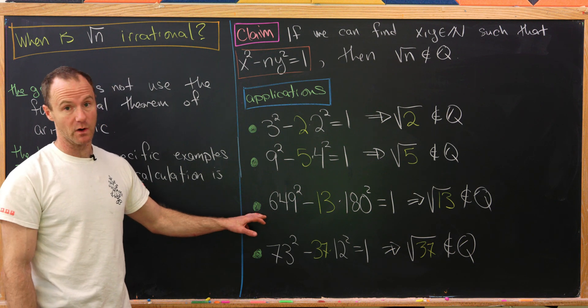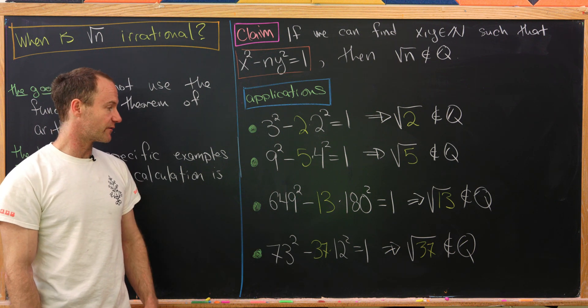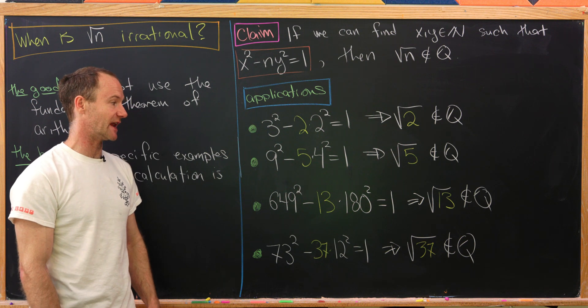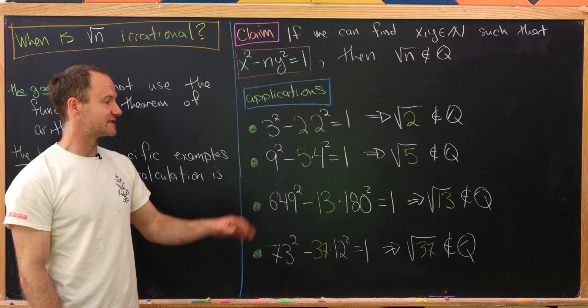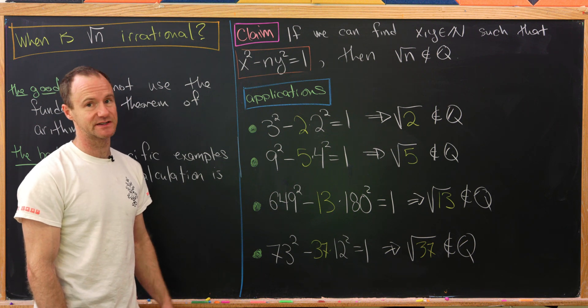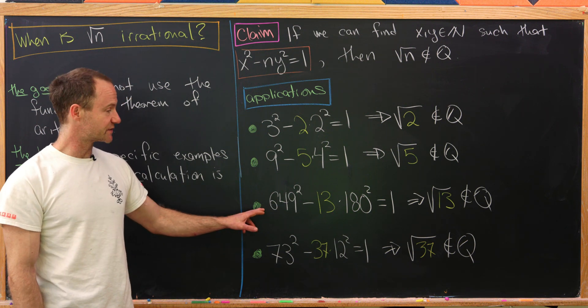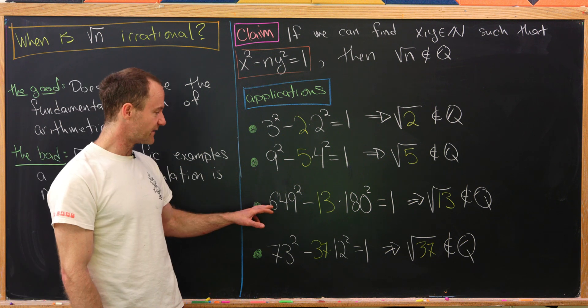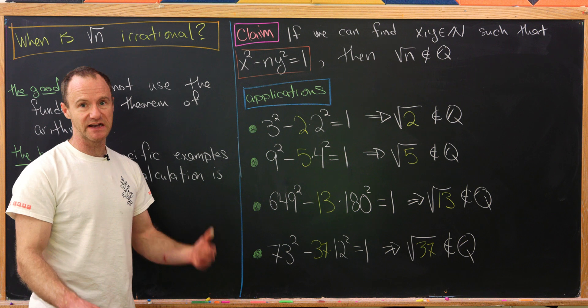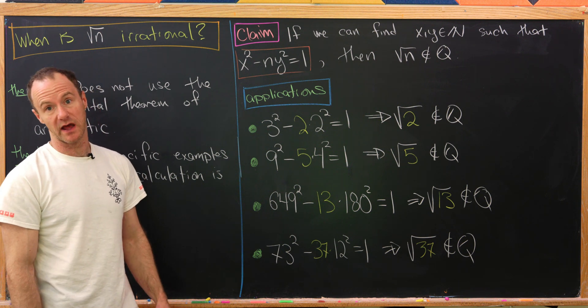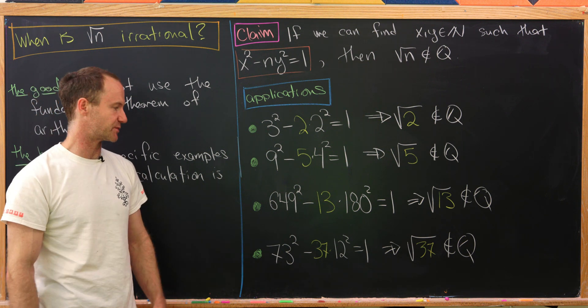Here's a big one. 649 squared minus 13 times 180 squared is equal to 1. Who knew? And that means that the square root of 13 is irrational. And actually, I did this one in Mathematica, and this value of x and y were the only solutions if x and y were between 0 and 1,000. So that in itself is pretty interesting.